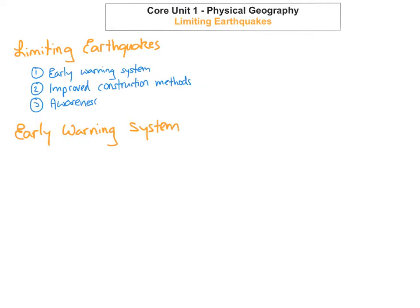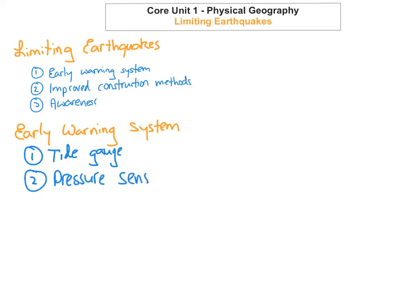The first thing we're going to look at is early warning systems. One of the tools is a tidal gauge, which basically measures any changes in the tide. We also have pressure sensors that go to the bottom of the seafloor, and those pressure sensors measure any changes in pressure.